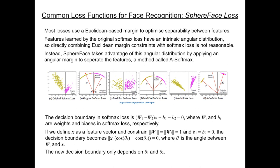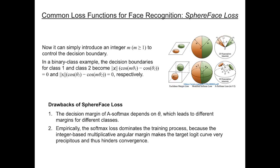By constraining the weights and biases, the new decision boundary only depends on theta 1 and 2, so it's then just a matter of adding an integer m to control the decision boundary. m quantitatively controls the size of the angular margin, simultaneously enlarging the interclass margin and compressing the intraclass angular distribution.